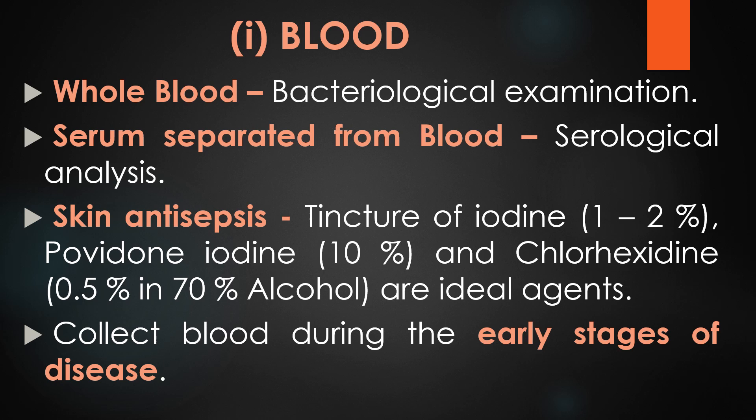First, we will discuss about collection of blood. Whole blood is required for the bacteriological examination. Serum separated from the blood is used for serological techniques. Skin antiseptics is extremely important at the time of collection of samples. It includes tincture of iodine 1-2%, povidone iodine 10%, and chlorhexidine 0.5% in 70% alcohol as the ideal agents. However, some individuals may be hypersensitive to iodine present in some of these. Collect the blood during the early stage of the disease since the number of bacteria in blood is higher in the acute and early stage of the disease.